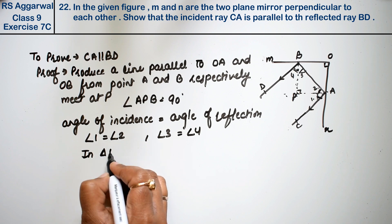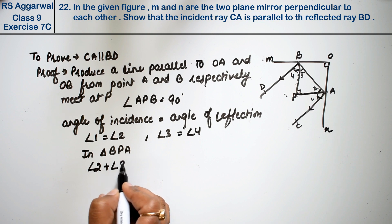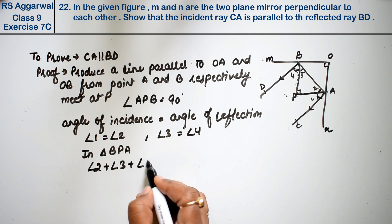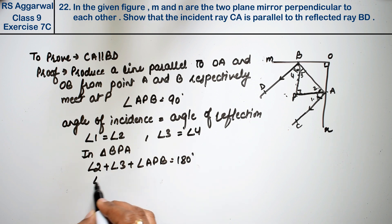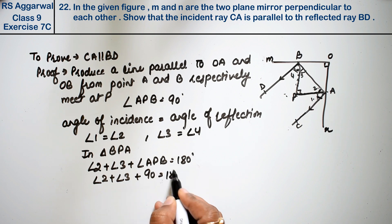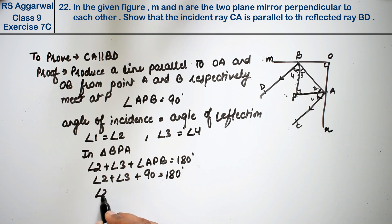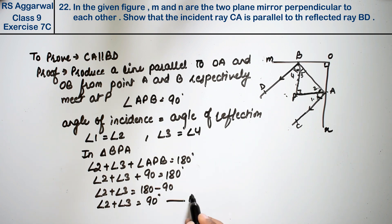In triangle BPA, angle 2 plus angle 3 plus angle APB equals 180 degrees. Now, angle APB is 90 degrees, so angle 2 plus angle 3 equals 180 minus 90, which gives us angle 2 plus angle 3 equals 90 degrees. This is our first equation.